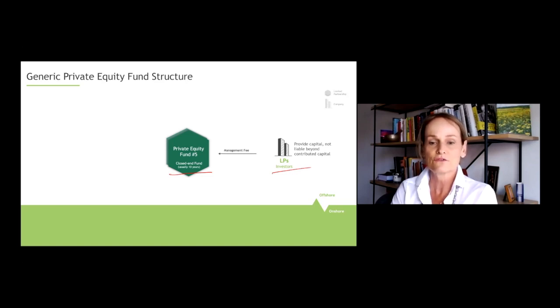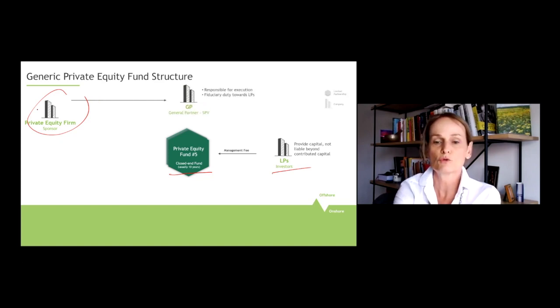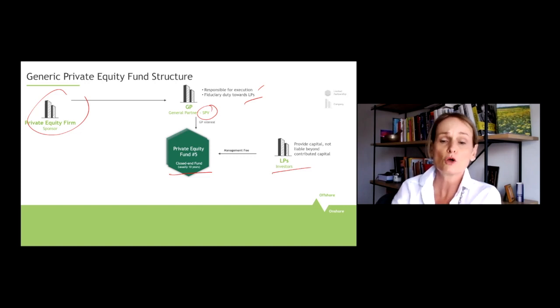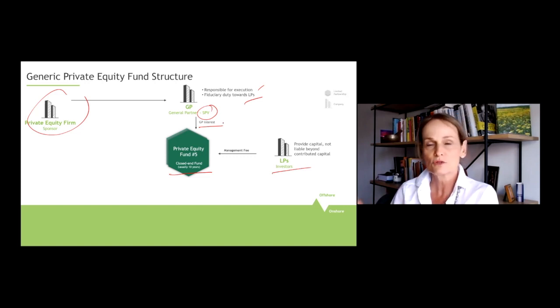So the LPs invest in the fund. They are called limited partners because their liability is limited only to the capital committed to the fund. The private equity firm, the sponsor also in some jurisdictions will basically allocate, will create a special purpose vehicle, also called a GP, a general partner that is usually staffed by senior partners from the private equity firm. The GP is responsible for the execution of the deals, for deal sourcing and execution, and ultimately is also responsible for the fiduciary duty towards the LPs. The GP will also invest in the fund, usually anywhere between three and seven percent. It can be more in very few funds, but usually the GP will invest in the fund to align the interest between the GPs and the LPs. The LPs call this so nicely, skin in the game.